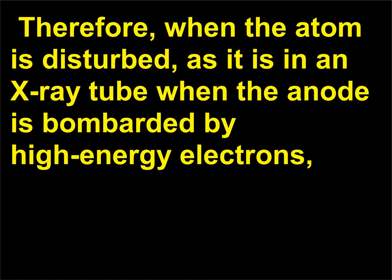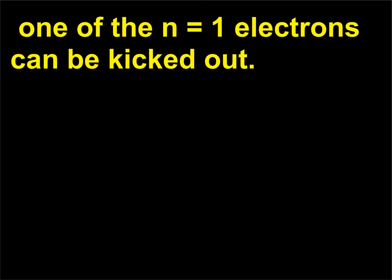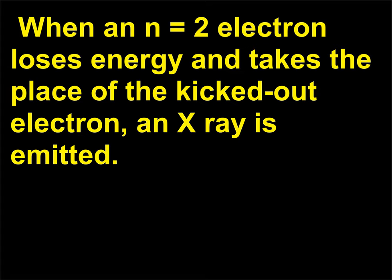Therefore, when the atom is disturbed — as it is in an X-ray tube when the anode is bombarded by high-energy electrons — one of the n = 1 electrons can be kicked out. When an n = 2 electron loses energy and takes the place of the kicked-out electron, an X-ray is emitted.